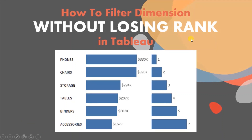In today's session we will see how to give rank to a dimension based on a measure. For example, we want to give rank to the subcategories based on the decreasing order of sales and then maintain the rank when we filter out any subcategories from the view.